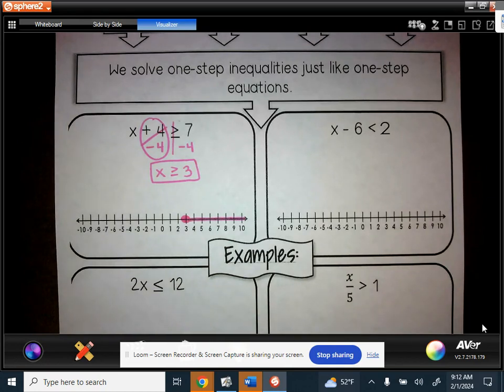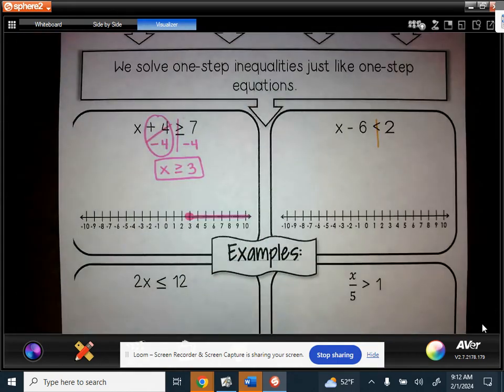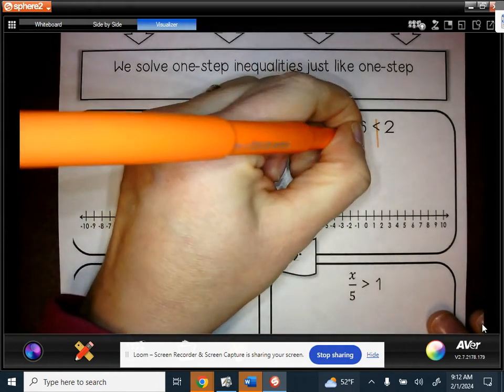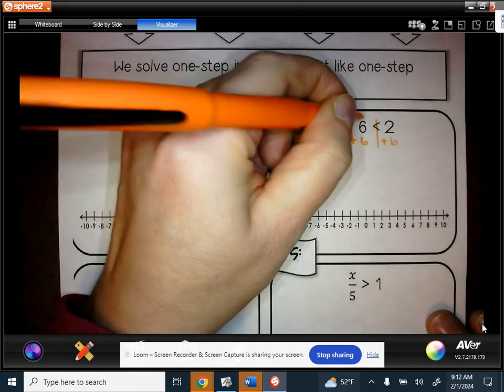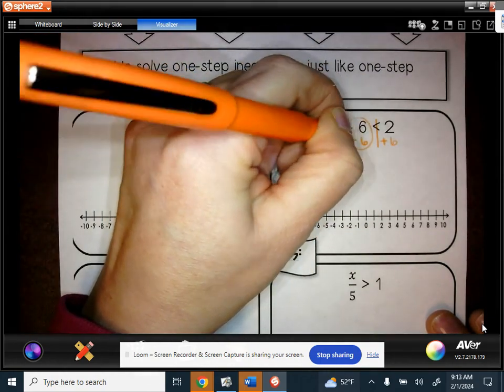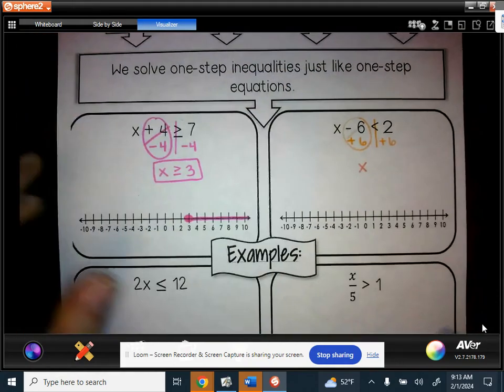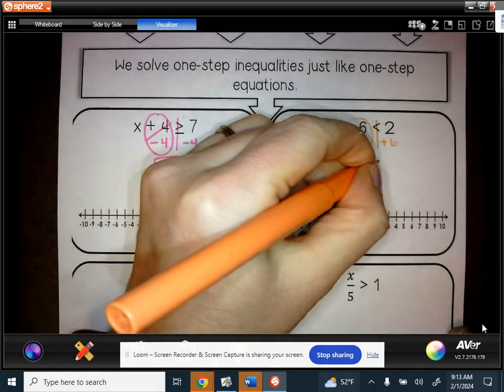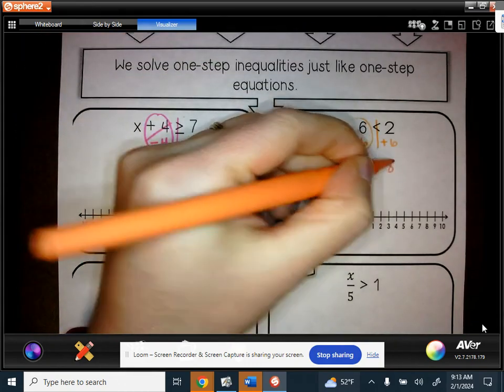On the next problem, we see a less than symbol, and we see that a minus 6 is keeping x from being by itself. So the opposite of that would be plus 6, and we want to do that on both sides. That right there is going to cancel out, leaving just x by itself, which is our goal. Our symbol stays the same, and then we have 2 plus 6, which equals 8. So our solution set here is that x is less than 8.